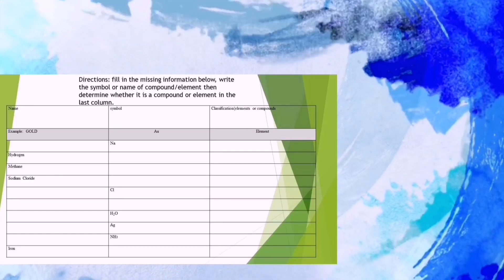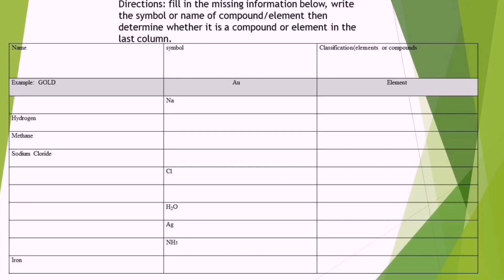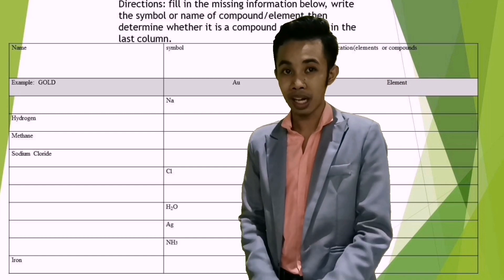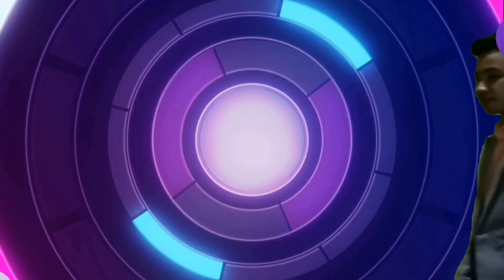Did you learn something? If you did, I want you to answer this activity. Fill in the missing information below — write the symbol or name of the compound or element, then determine whether it is a compound or element in the last column. Here is the answer to your activity. For your follow-up quiz, just visit this link.